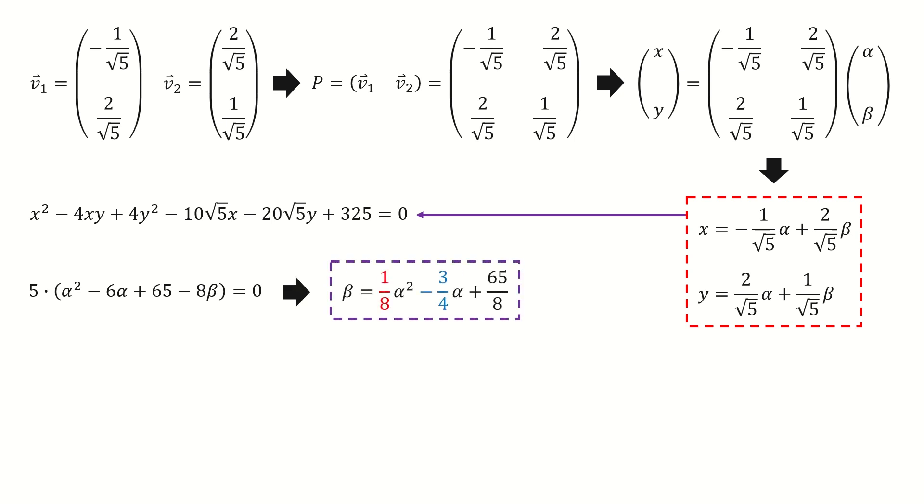Then we plug them into the original equation to replace xy. After simplify it, we got the desired equation in alpha-beta coordinate. So it's a parabola, and we are done for the question 1.